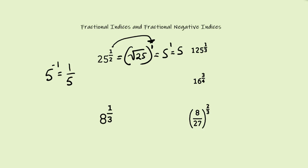So if we write a general rule for fractional indices, we can write it as x to the power of m over n, which equals the n-th root of x, to the power of m.